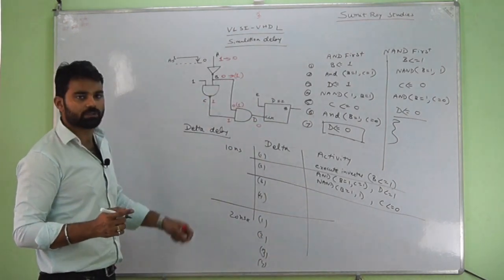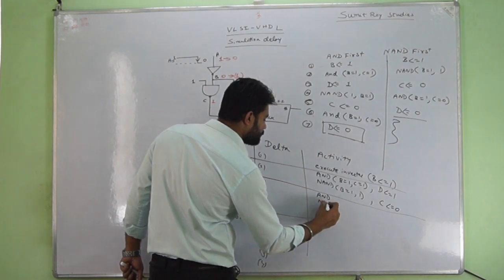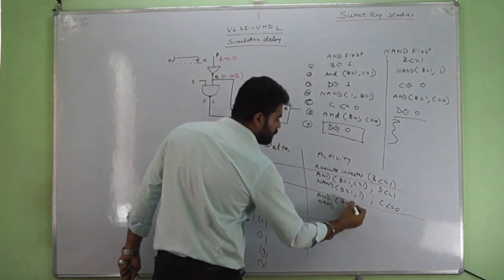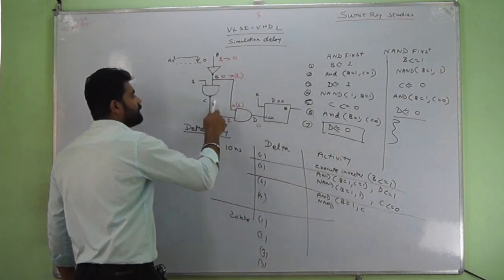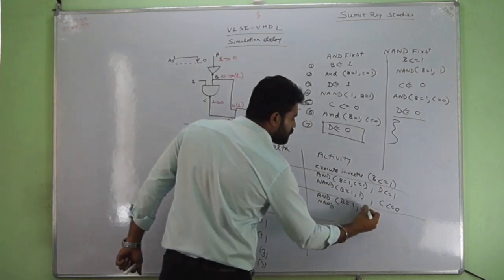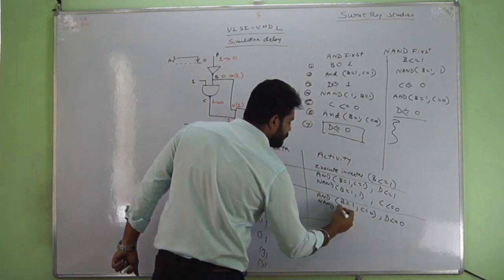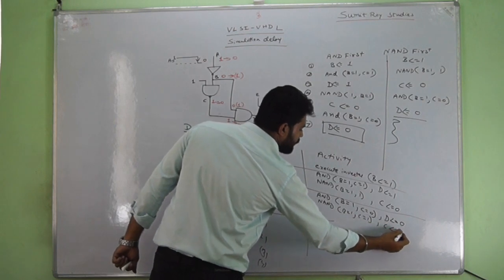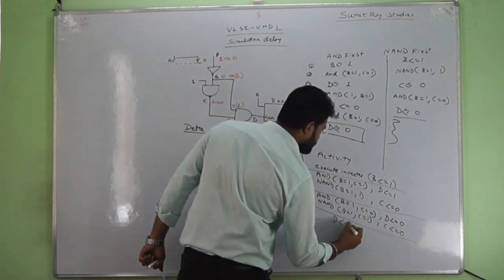In delta 3, both AND and NAND are again considered regardless of whether their inputs changed. AND is executed with B equal to 1 and C equal to 0 (which changed due to the NAND operation), giving D equal to 0. NAND with B equal to 1 and C equal to 1 keeps C at 0. At the fourth delta, the output D is established and stable at 0.